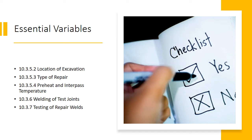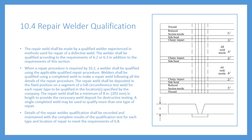Repair Welder Qualification. Section 10.4 lays out repair welder qualification. Welders shall be qualified with the methods used for repairs of a defective weld, in accordance with sections 6.2 and 6.3 in addition to the requirements of this section. A welder shall be qualified as used in the applicable repair procedure. Details of repair welder qualification shall be recorded and maintained with complete results of the qualification test for each type and location of repair, meeting the requirements of 6.8.